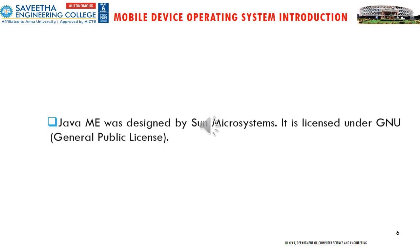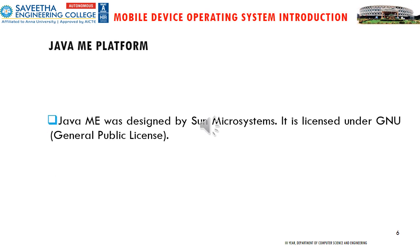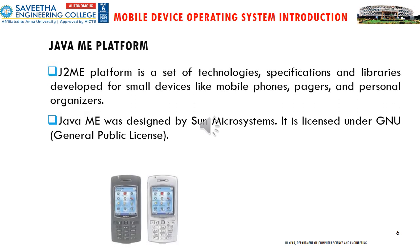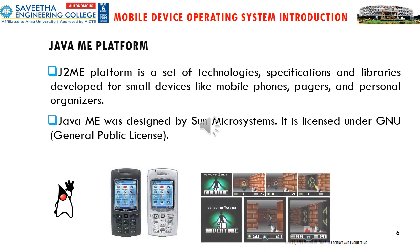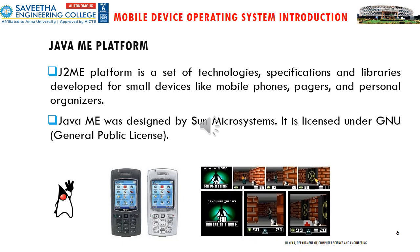Next we will see what is the J2ME platform. J2ME is a set of technologies, specifications, and libraries developed for small devices like mobile phones, pagers, and personal organizers. Java ME was designed by Sun Microsystems and is licensed under the General Public License. J2ME is still being used for game development.